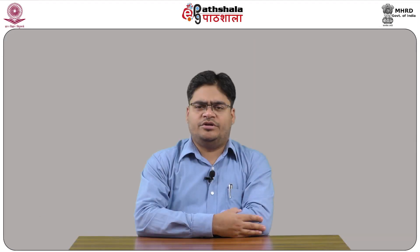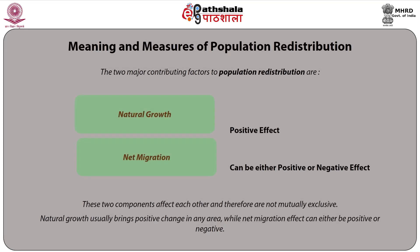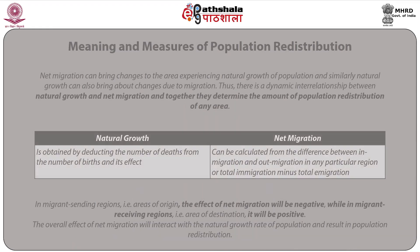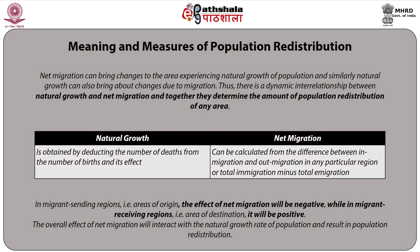There are two essential components of population redistribution. The two major contributing factors are natural growth and net migration. These two components affect each other and are therefore not mutually exclusive. Natural growth usually brings positive change in any area, while net migration's effect can either be positive or negative. Net migration can bring changes to an area experiencing natural growth of population, and similarly natural growth can also bring about changes due to migration. The natural growth of any particular region is obtained by deducting the number of deaths from the number of births.